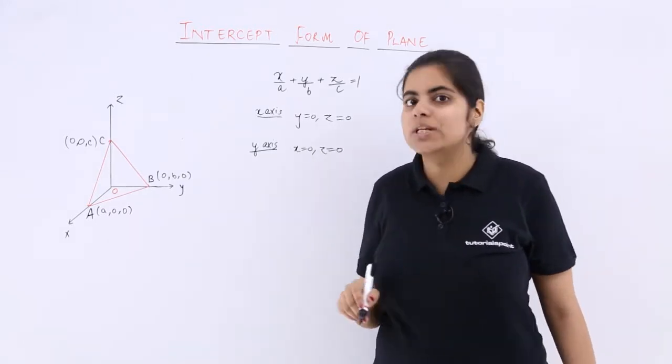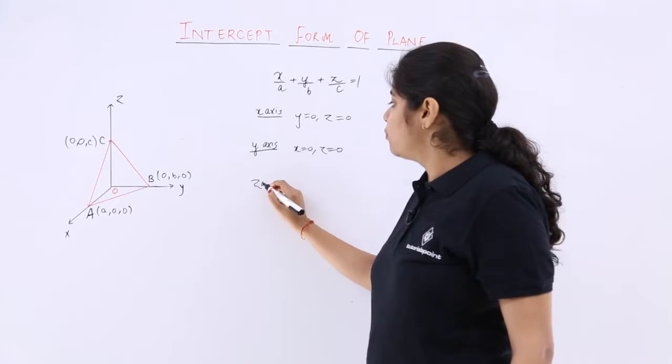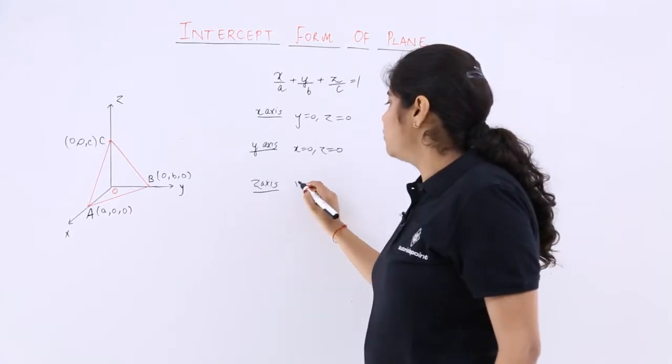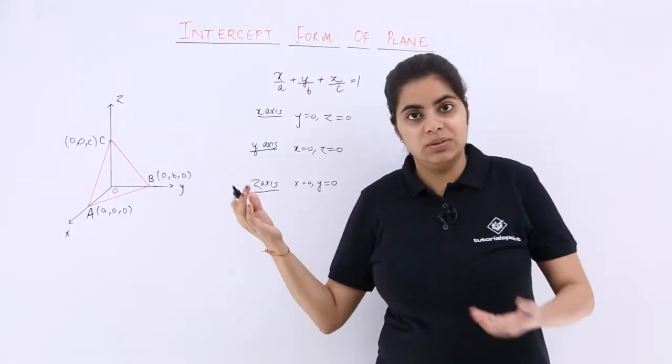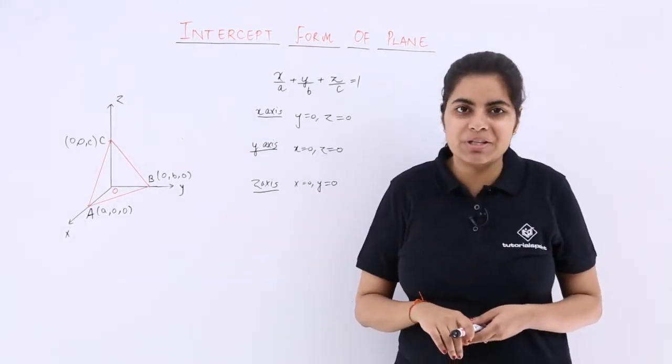Similarly, to find the intercept on the z-axis, put x = 0 and y = 0. Then you'll get the intercept on the z-axis.